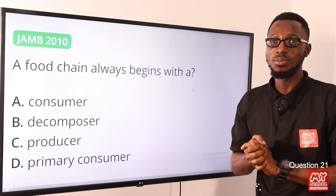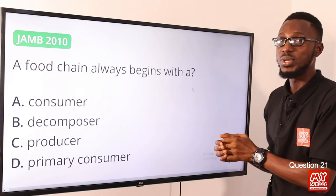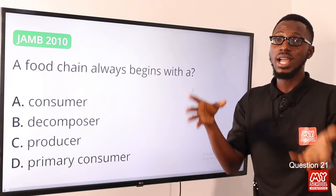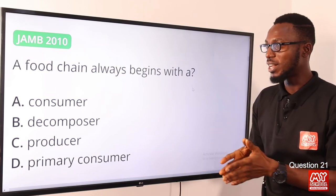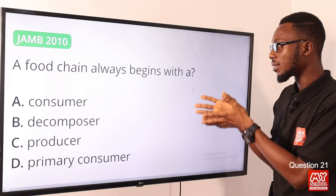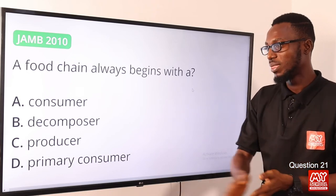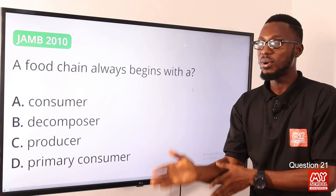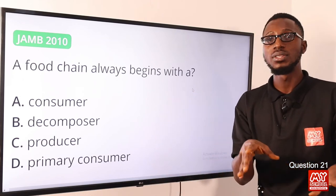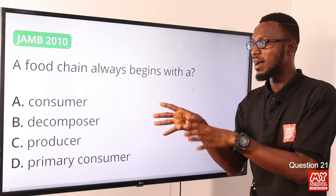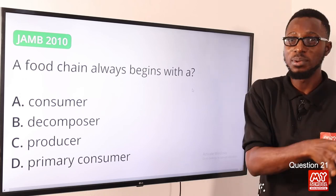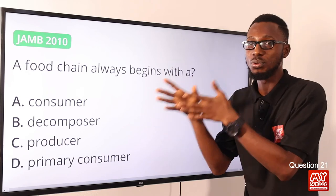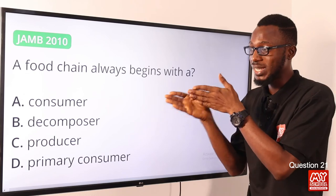Question 21: A food chain always begins with what? A food chain is a feeding pathway that shows the transfer of energy and nutrients. A food chain always begins with the primary producer. In practice, food chains specify organism names — for example, grass to grasshopper — but it always starts with the producer. The correct option is option C, the primary producer.